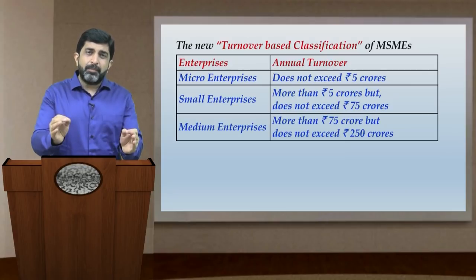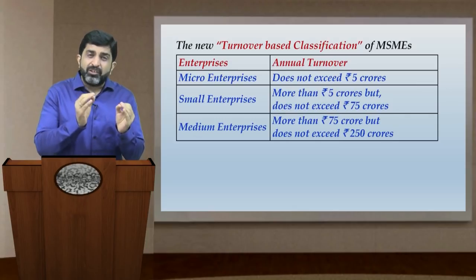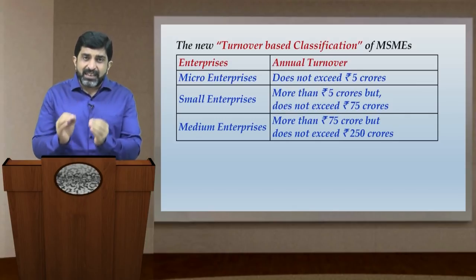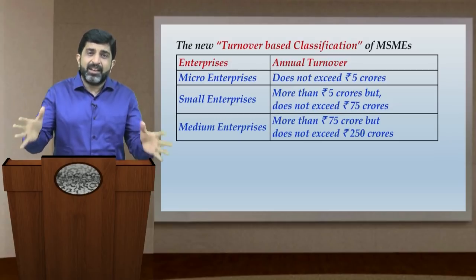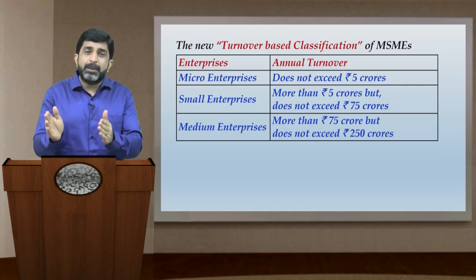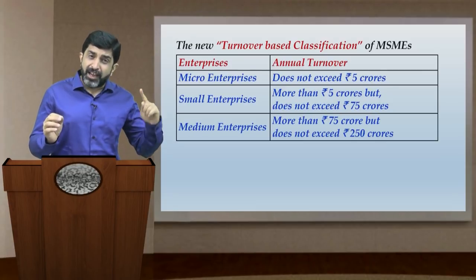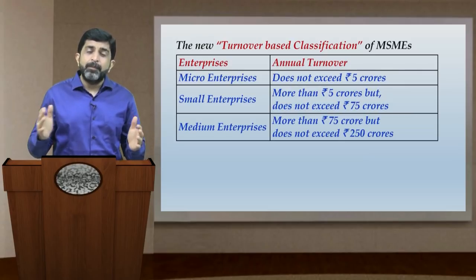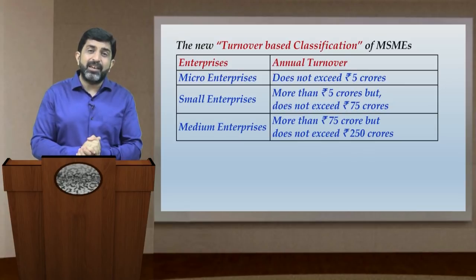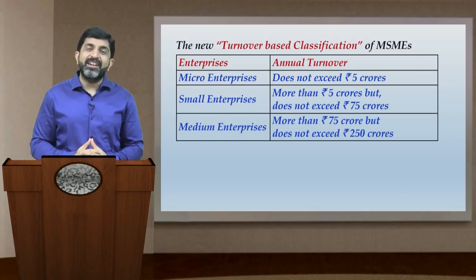You should clearly write both the old limits and the new limits in your answer. Friends, this new criteria that you see here is a common criteria — whether it is a manufacturing unit or a service-rendering enterprise, the same criteria applies. The investment criterion has been removed entirely. Now only the turnover of an enterprise will be seen. If any enterprise's turnover exceeds rupees 250 crores, it will not fall under any MSME classification and will be known as a large business entity. Friends, that is all for this session — thank you so much for attending this class.